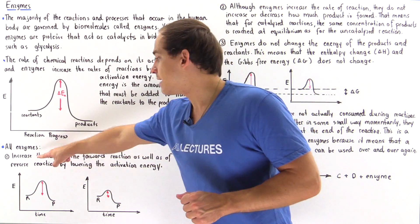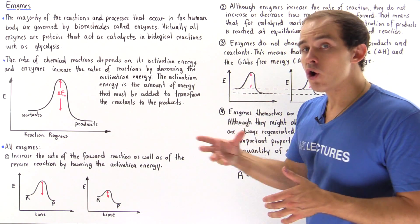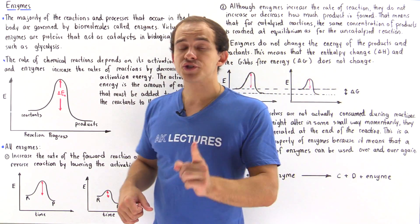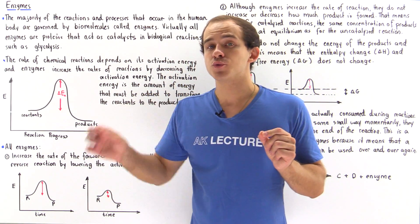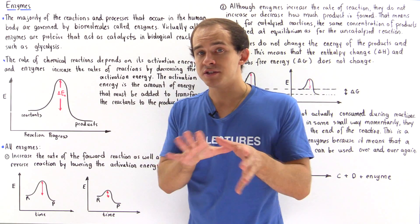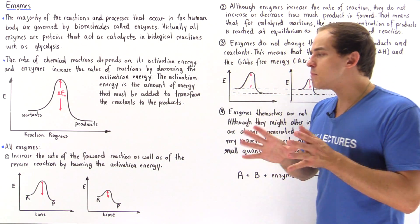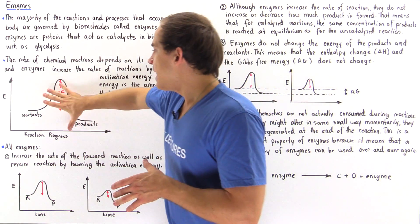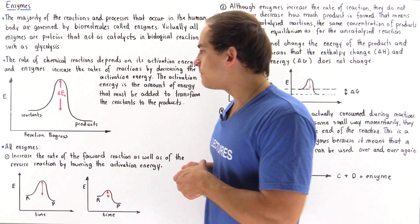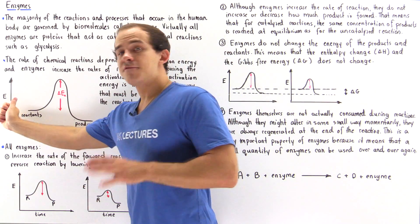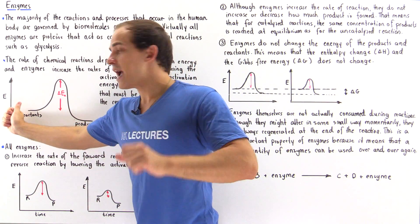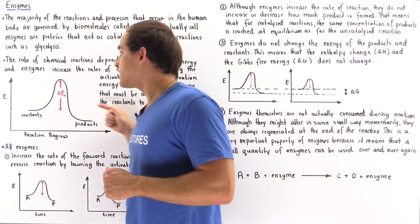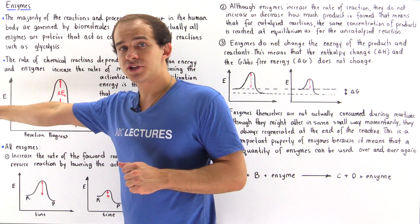Enzymes increase the rate of the forward reaction, but they also increase the rate of the reverse reaction — a very important point that most people sometimes miss. If we look at the following diagram, we have the forward reaction going this way and we also have the reverse reaction going this way.